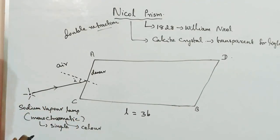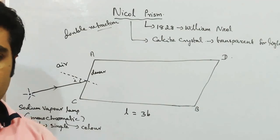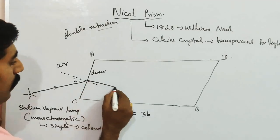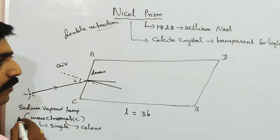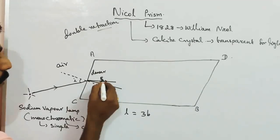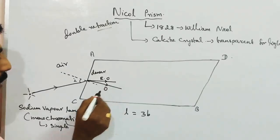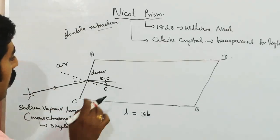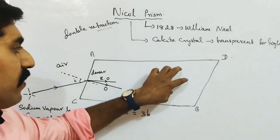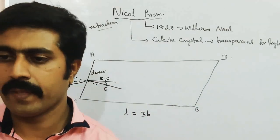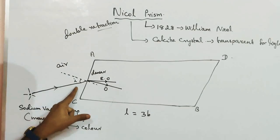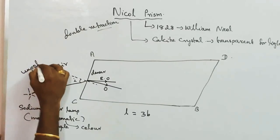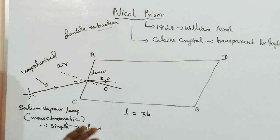So the process is refraction — double refraction. So the light ray is split into two rays. This is the extraordinary ray and this is the ordinary ray. So this is polarisation — unpolarised light undergoes double refraction.